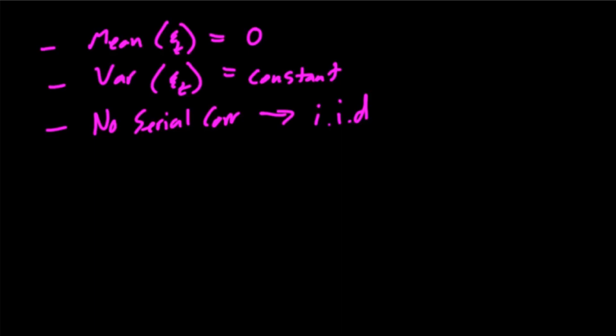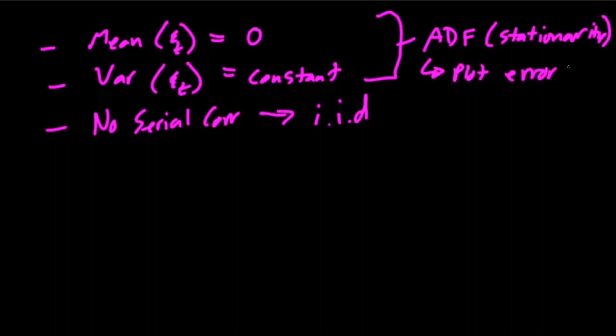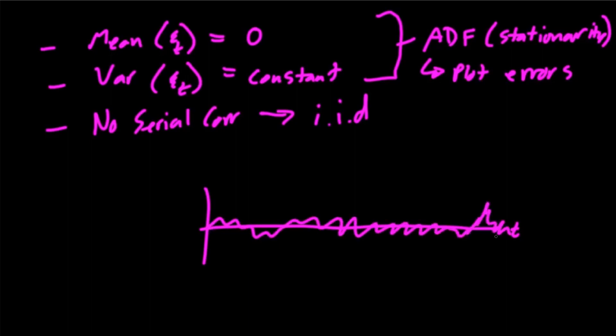An obvious test is you could run an ADF, a stationarity test. This will essentially test that your mean is going to be zero and your variance is going to be constant. To check for the zero mean though, you're going to have to plot these. So plot your errors, and your errors should look something like this - this is time - they should look like this. That's going to be able to test for the mean of zero and the variance that is constant.